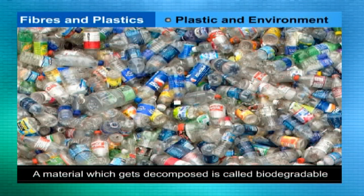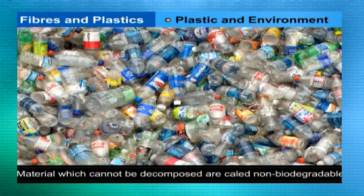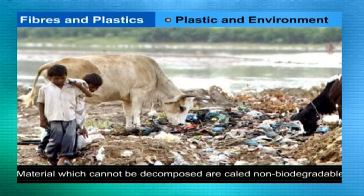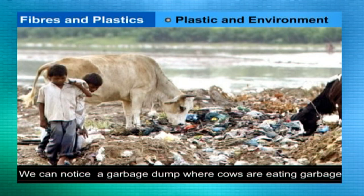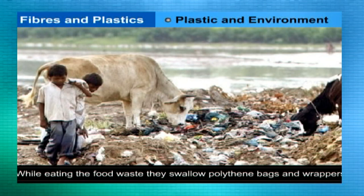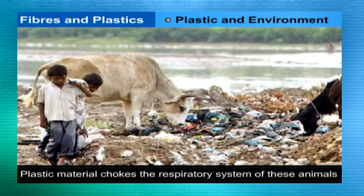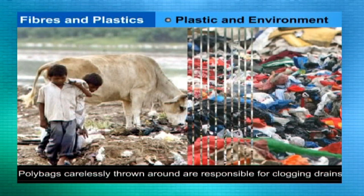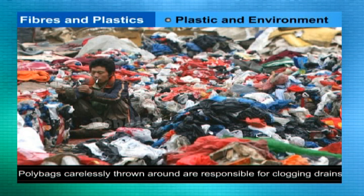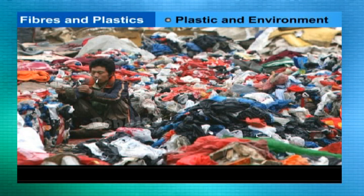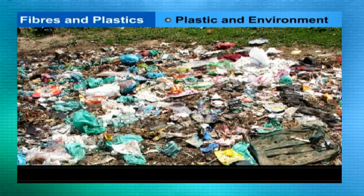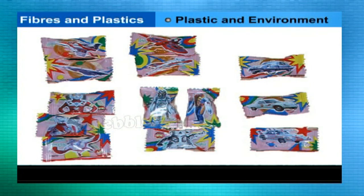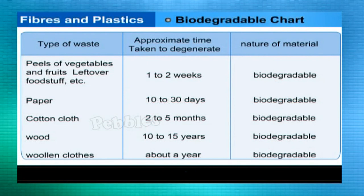Plastic and the environment: a material that gets decomposed through natural processes such as action by bacteria is called biodegradable; a material not easily decomposed is termed non-biodegradable. Animals, especially cows eating garbage, swallow materials like polythene bags, which choke their respiratory system or form a lining in their stomachs, potentially causing death. Polythene bags carelessly thrown around also clog drains. Wrappers of chips, biscuits, and other eatables thrown in parks or picnic places contribute to this problem.